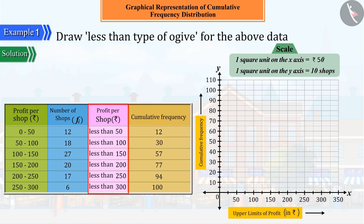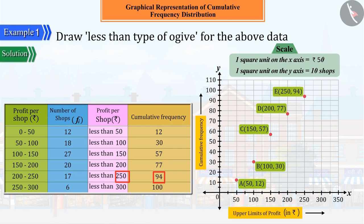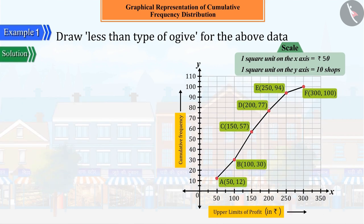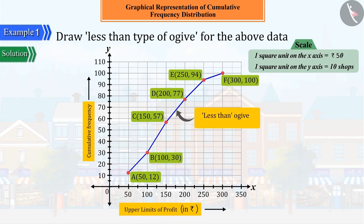Let us now plot the corresponding points A, B, C, D, E and F of ordered pairs obtained from all these upper limits and corresponding cumulative frequency, and join all these points carefully. The curve so obtained is called the less than cumulative frequency curve or ogive.